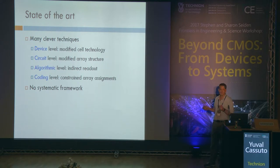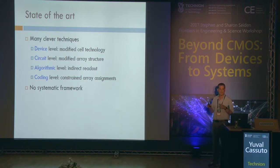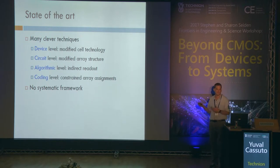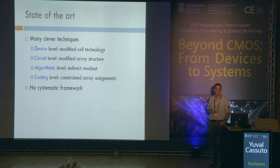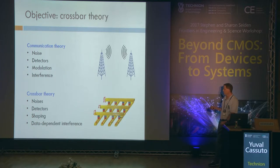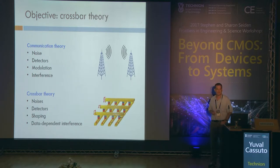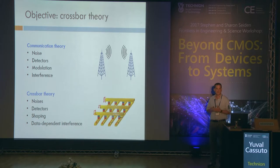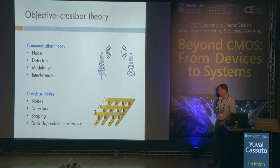We have solutions at the device level — making individual cells better for sneak paths — ideas at the circuit level, algorithmic ideas for how to read and write better, and ideas in coding for how to encode the data. But each one alone cannot solve the problem, and we look for a more systematic framework that harnesses all of them together. Our model for success is digital communication, whose great success came within a very rich theoretical framework.